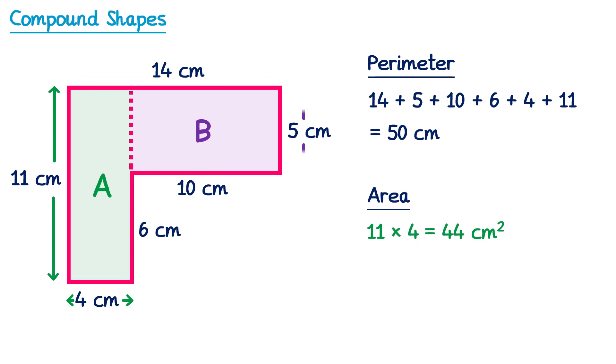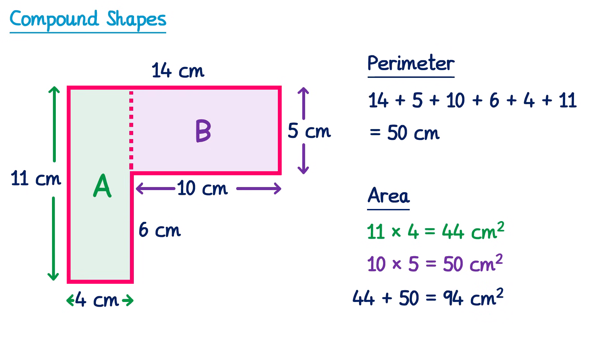For rectangle B the height is 5 and the width is 10. So we do 5 multiplied by 10, which is 50 centimeters squared. To find the total area we then add these two areas together: 44 plus 50, which is 94 centimeters squared.